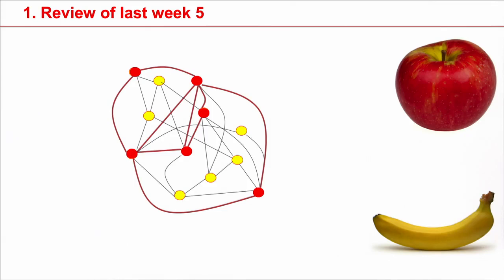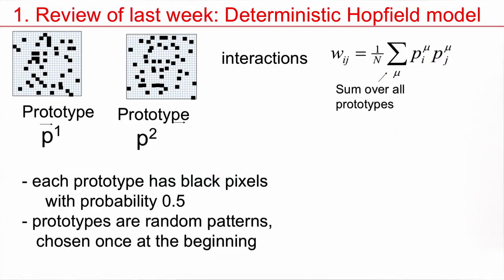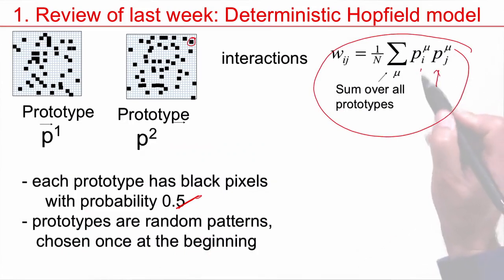Last week we looked at a Hopfield model as an example of a Hebbian assembly. You store different patterns, for example you can store the apple in a set of neurons that are active together. Later, you may want to store a banana in a different set of active neurons. Of course, we don't work with images, we work with random prototypes and we said that the probability of a black pixel is 0.5 for each of the patterns, so we have several of these random patterns, several prototypes that we store in the network. These prototypes are once fixed at the beginning and that means we chose a certain rule for picking the weights and implicitly the patterns are encoded in these weights.